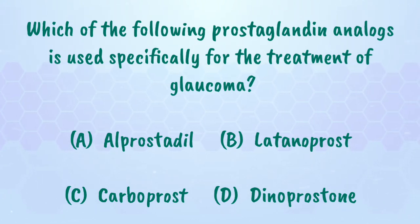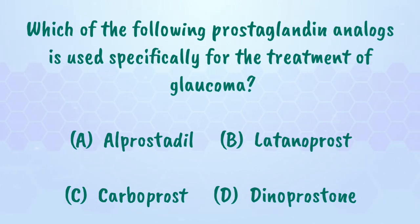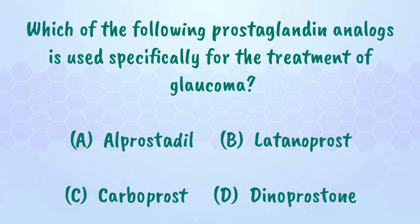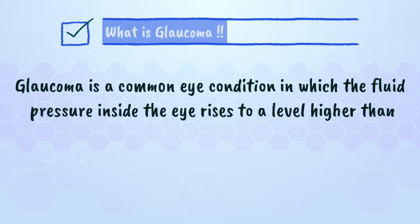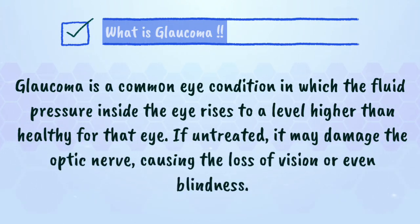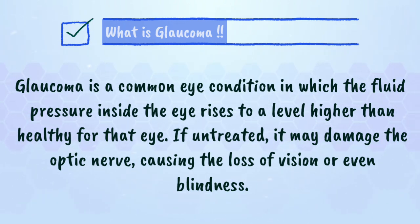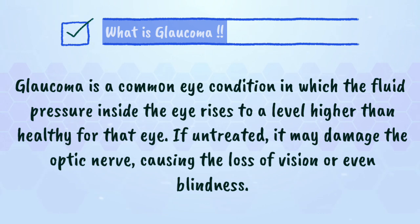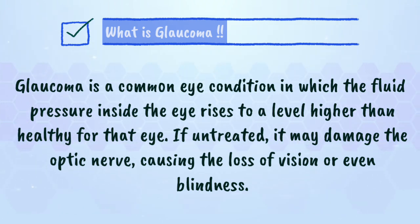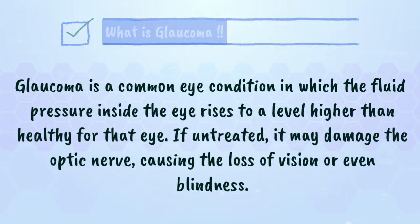Now let's check whether your answer is correct or not. Before going to the answer, let's check what is glaucoma. Glaucoma is a common eye condition in which the fluid pressure inside the eye rises to a level higher than healthy for that eye. If untreated, it may damage the optic nerve, causing loss of vision or even blindness.